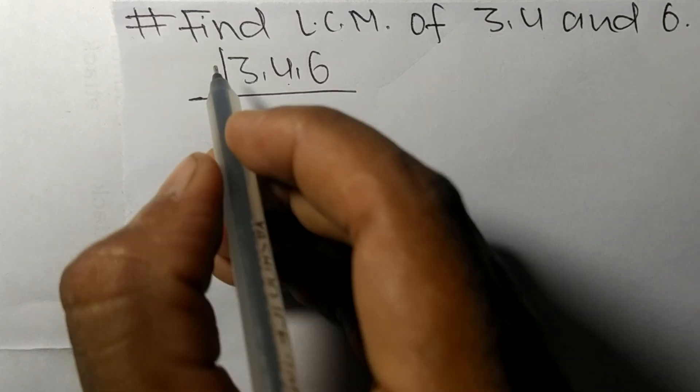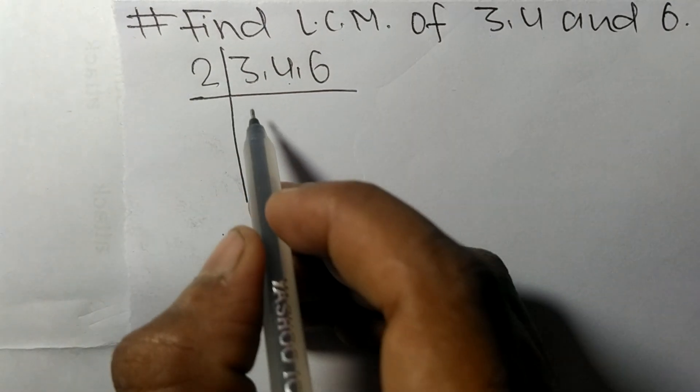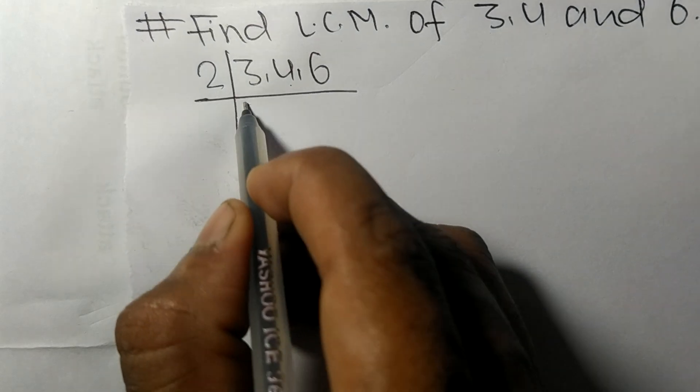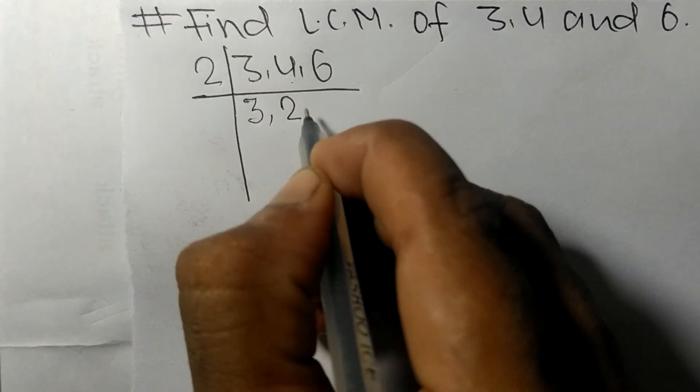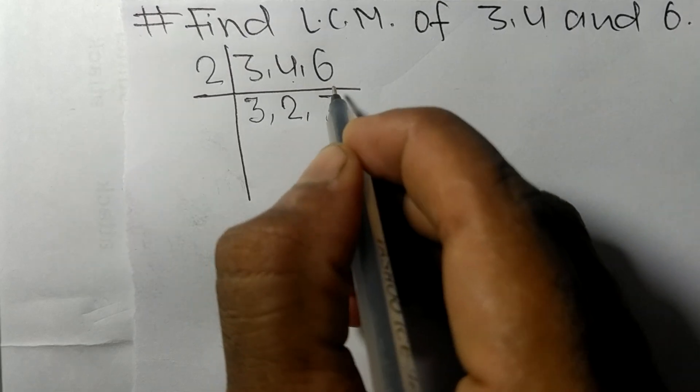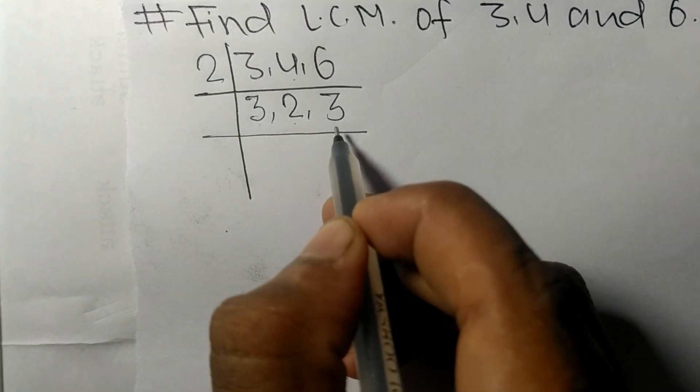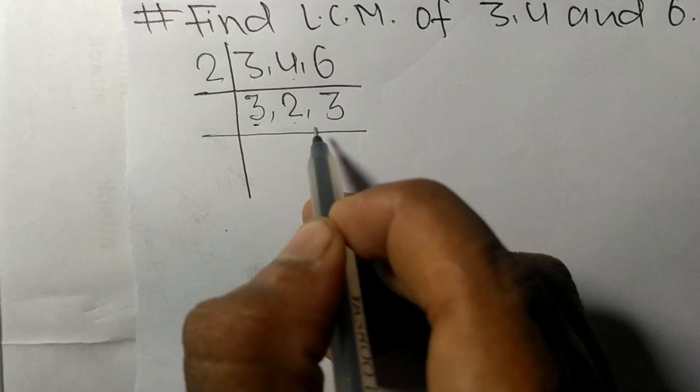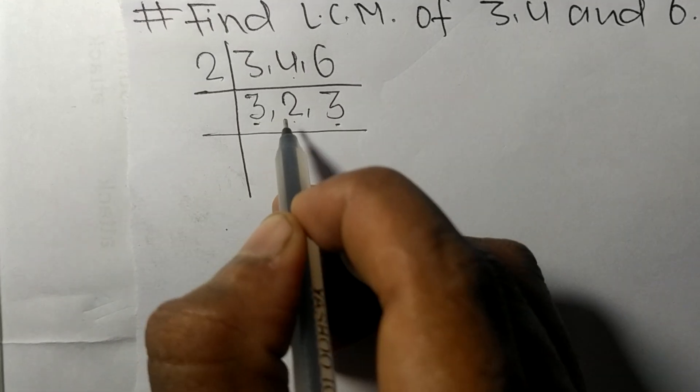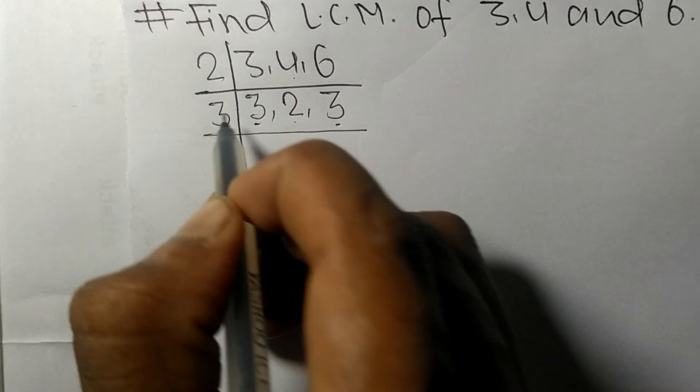6 are divisible by 2. So 3 is not divisible, so as it is. 2 times 2 means 4, 2 times 3 means 6. So now we got 3, 2, and 3, and these two 3s are exactly divisible by 3.